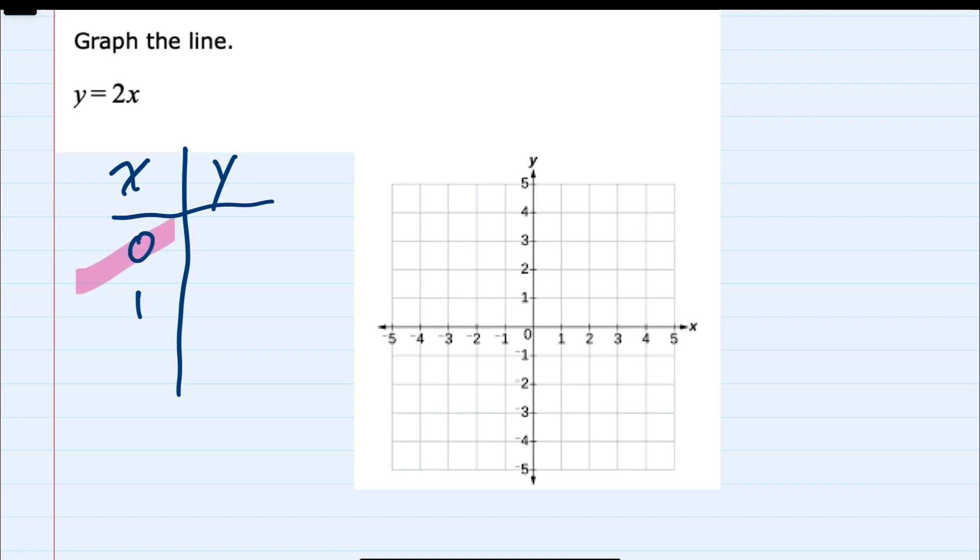Substitute these in for x to find the y value. Since I chose x equals 0 here for the first point, substituting in I would have y equals 2 times 0. Simplifies to y equals 0. So our first coordinate, our first point on the plane is 0, 0, which is the origin.